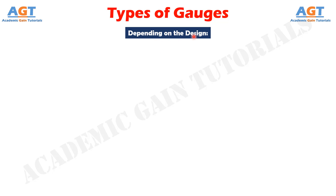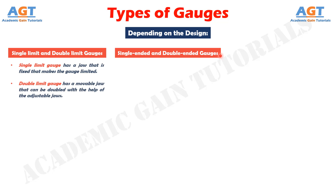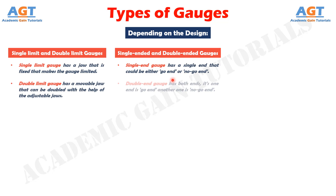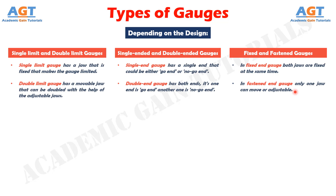Depending on the design. Single limit and double limit: the single limit gauge has a jaw that is fixed, making the gauge limited, but in the case of the double limit gauge it has a movable jaw that can be doubled with the help of adjustable jaws. Single ended and double ended: the single end gauge has a single end that could be either go end or no go end. Double end gauge has both ends — one end is go end and the other is no go end. Fixed and fastened gauges: in a fixed end gauge both jaws are fixed, but in a fastened end gauge only one jaw can move or is adjustable. These types are mainly a type of snap gauges.